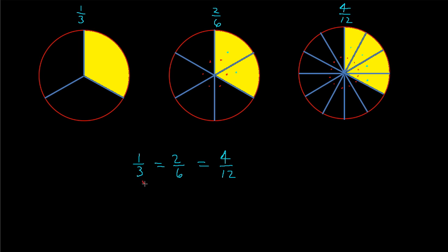I've taken that three and I've multiplied it by two. If you notice, the numerator has the same multiplier. Similarly, comparing two out of six to four out of twelve, I've multiplied the top by two, and the bottom by two.